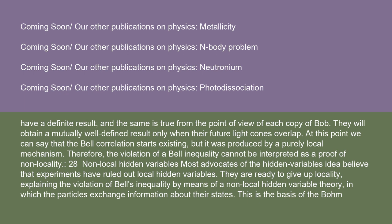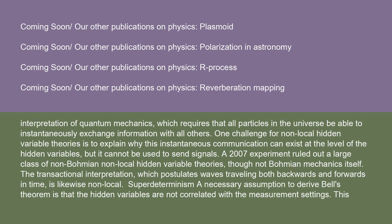Most advocates of the hidden variables idea believe that experiments have ruled out local hidden variables, and are ready to give up locality, explaining the violation of Bell's inequality by means of a non-local hidden variable theory in which the particles exchange information about their states. This is the basis of the Bohm interpretation of quantum mechanics, which requires that all particles in the universe be able to instantaneously exchange information with all others. One challenge for non-local hidden variable theories is to explain why this instantaneous communication can exist at the level of the hidden variables, but cannot be used to send signals. A 2007 experiment ruled out a large class of non-Bohmian, non-local hidden variable theories, though not Bohmian mechanics itself. The transactional interpretation, which postulates waves traveling both backwards and forwards in time, is likewise non-local.